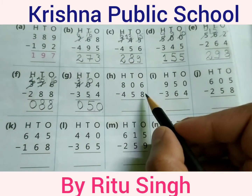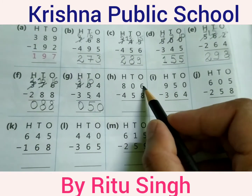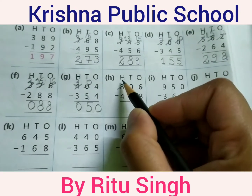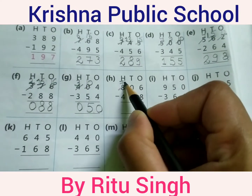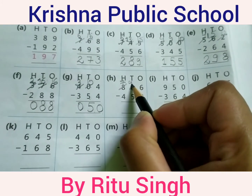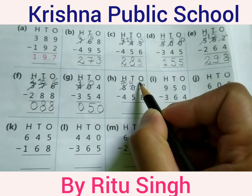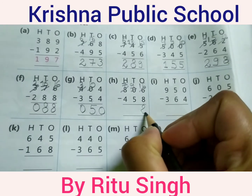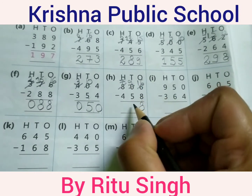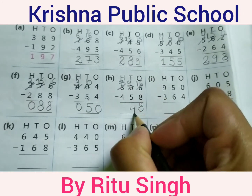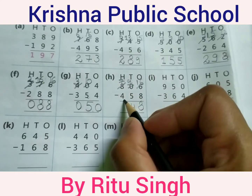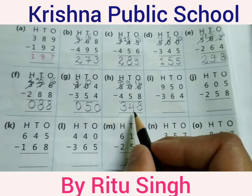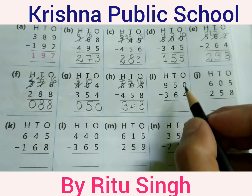Next: 6 minus 8 — 6 is a smaller digit compared to 8. Borrow from the hundreds position. Tens becomes 9, ones becomes 16. 16 minus 8 equals 8. 9 minus 5 equals 4. 7 minus 4 equals 3. Your answer is 348.